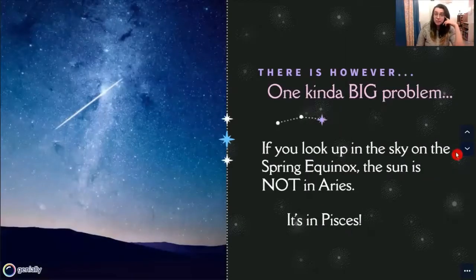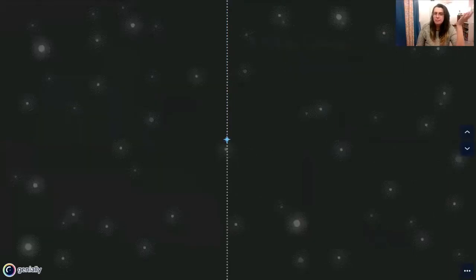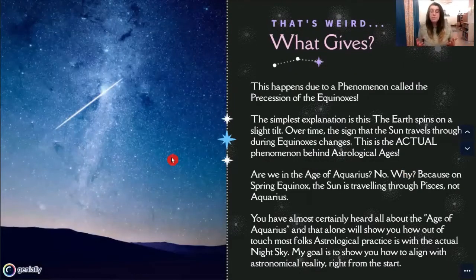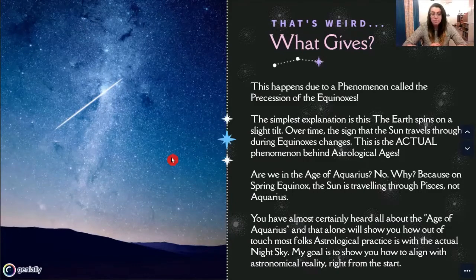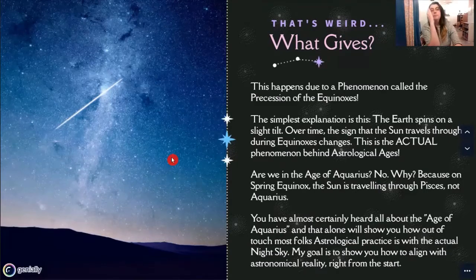The issue is this: if you go outside on the spring equinox and look up in the sky, the sun is not in Aries — it is in Pisces. This happens due to a phenomenon called precession of the equinoxes. The Earth spins on a slight tilt, so over time the sign that the sun travels through during the equinox changes.